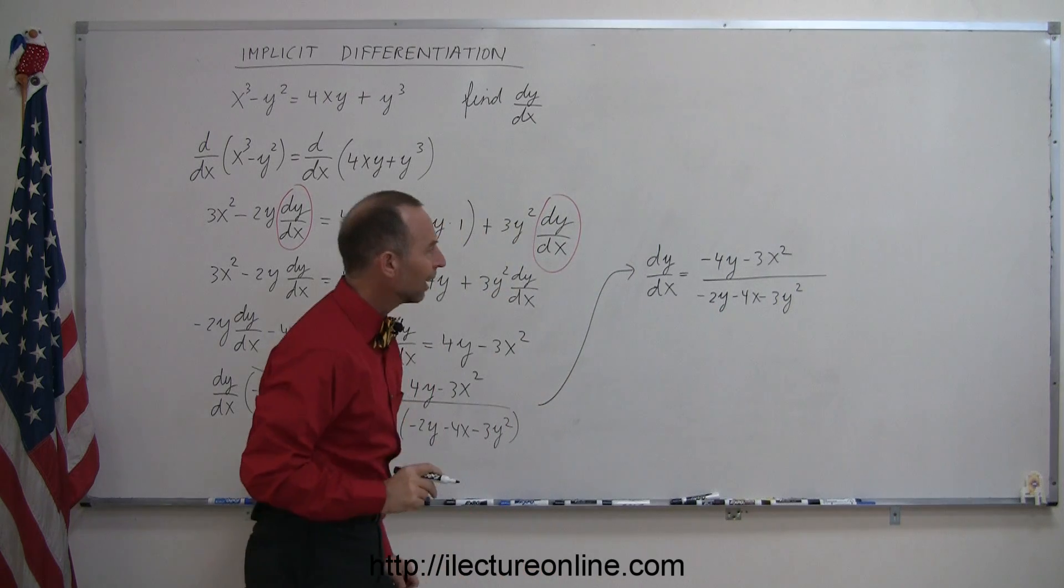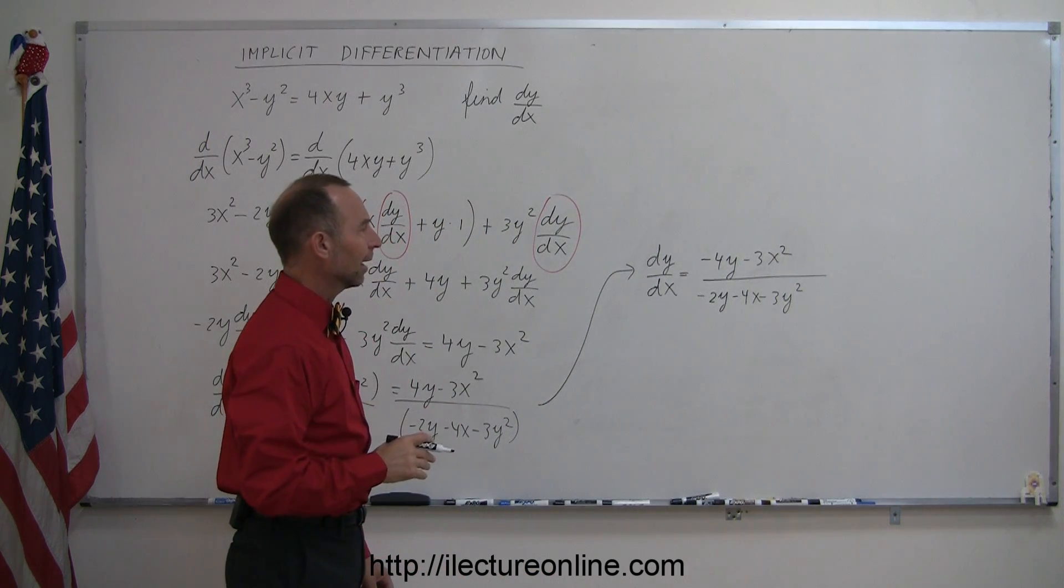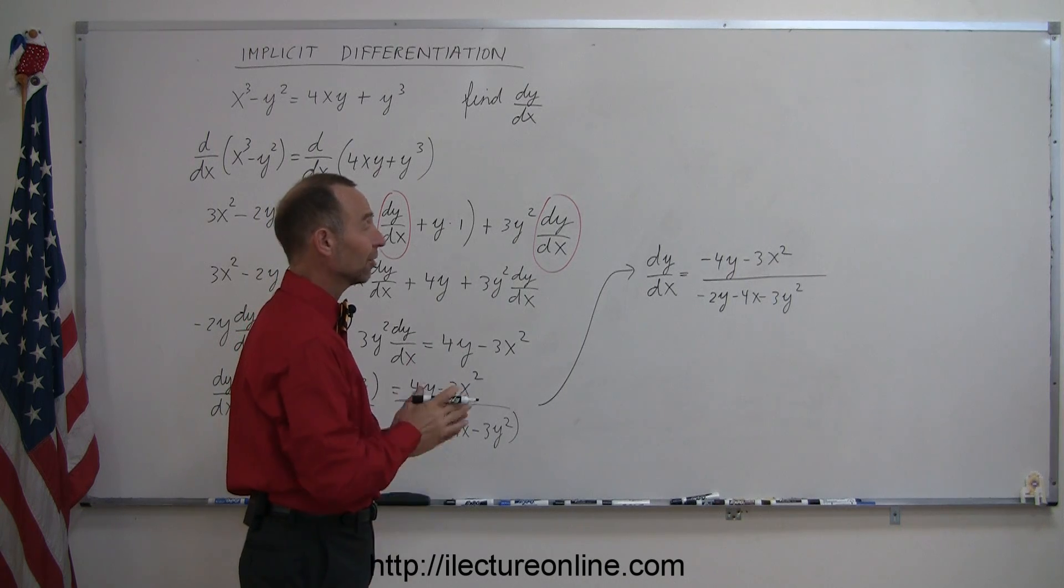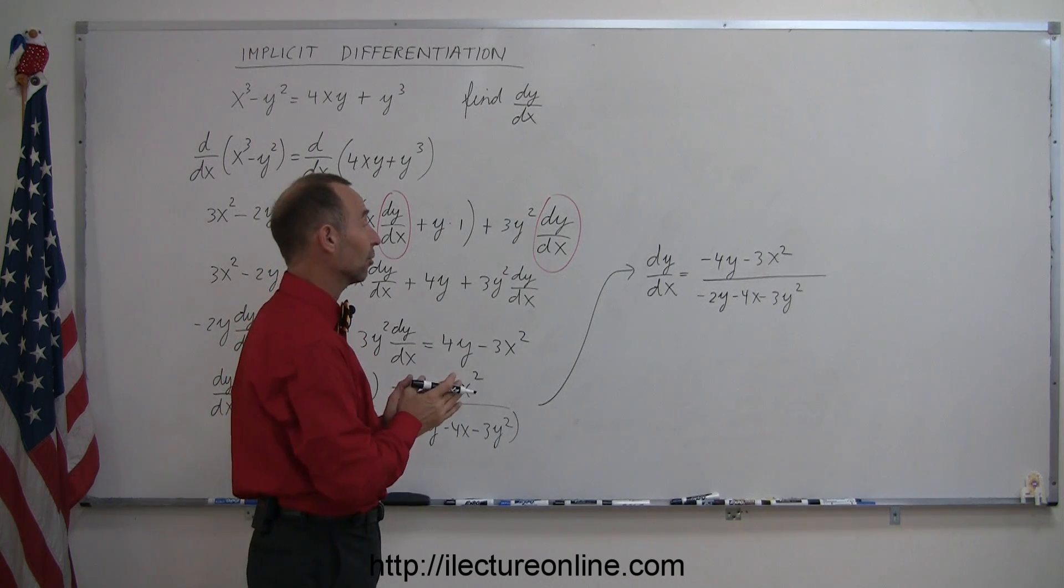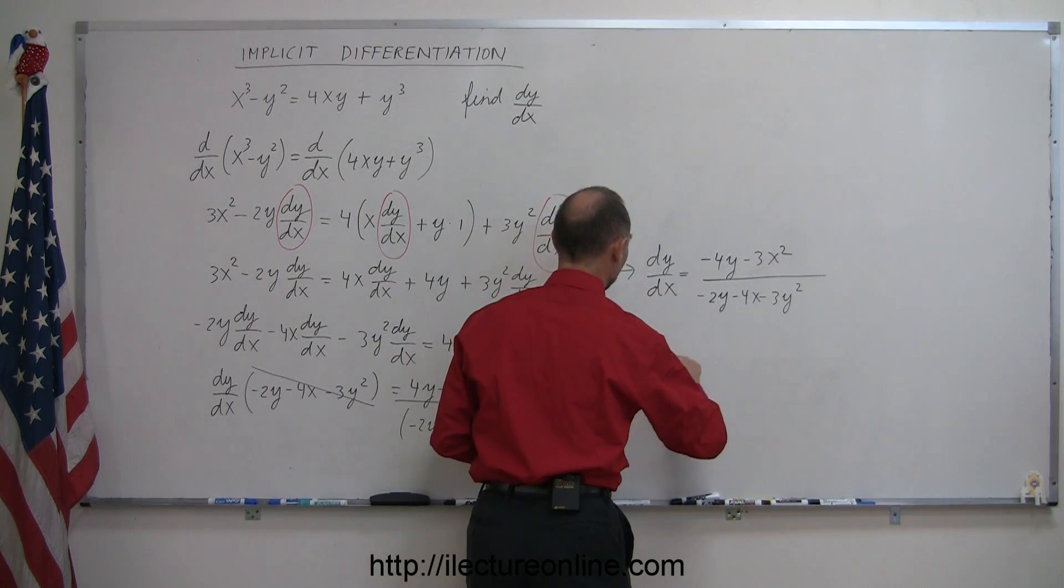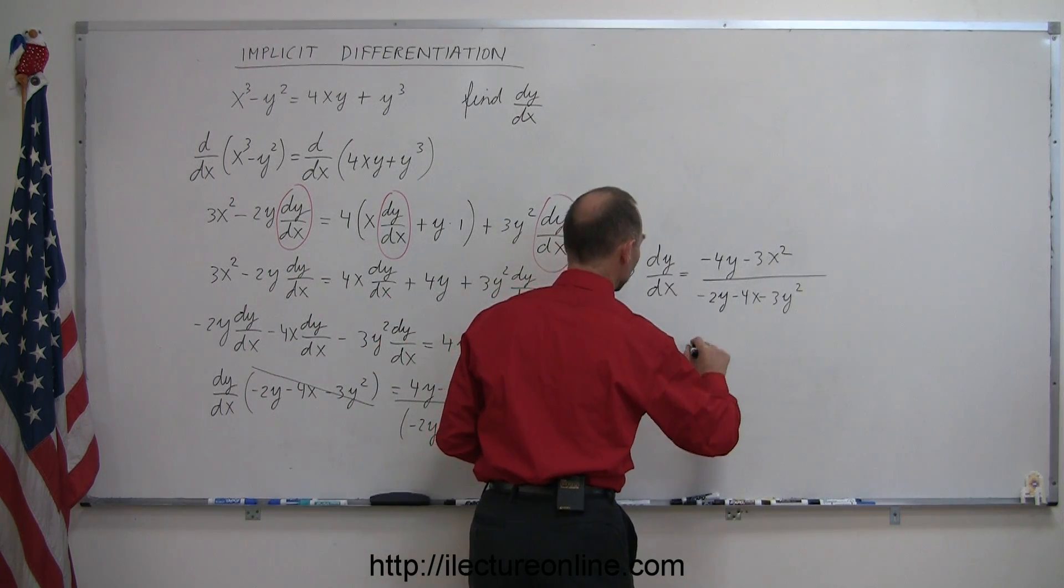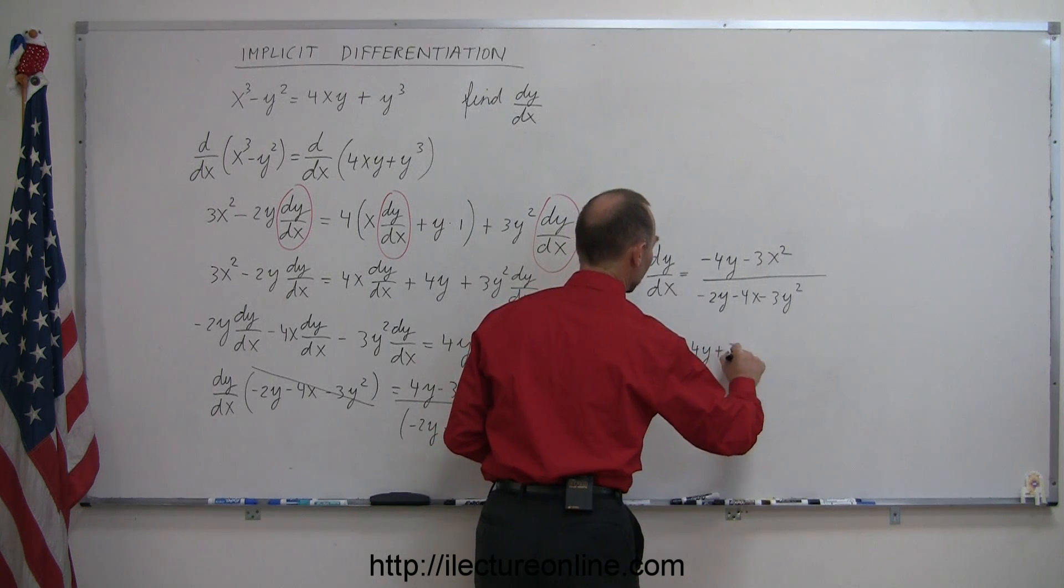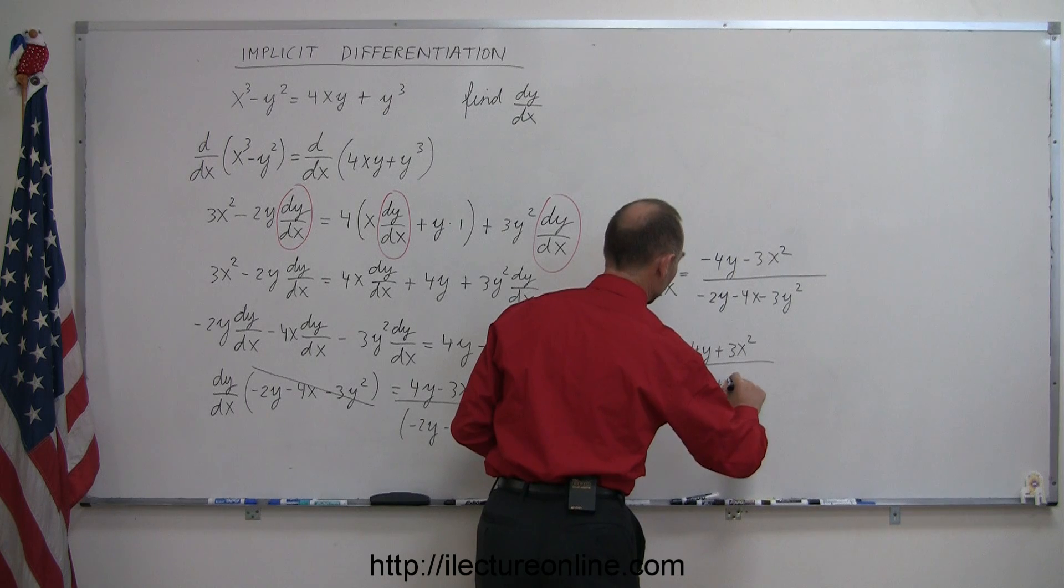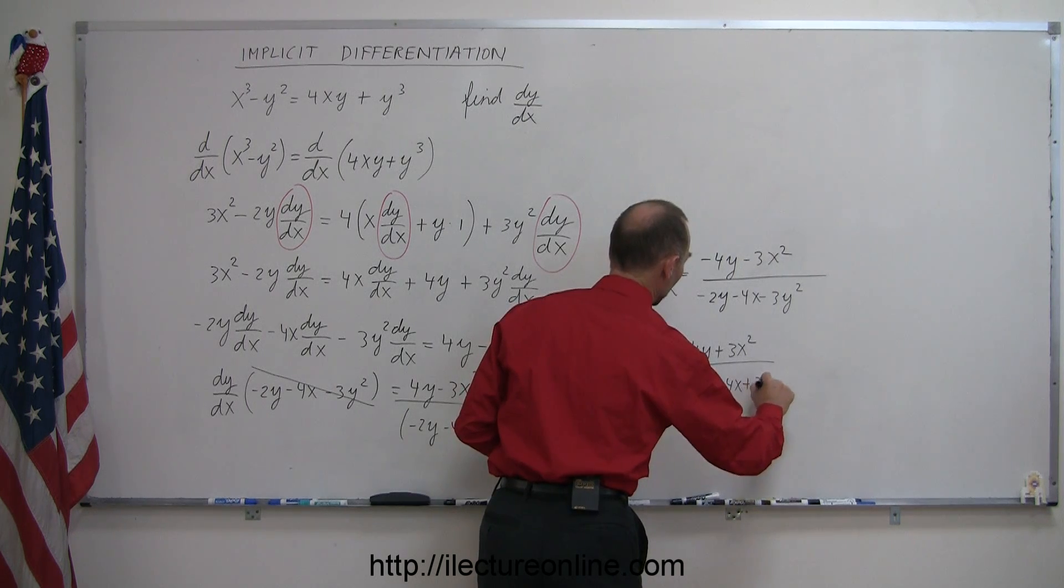Now I did notice something here. Every term on the right side has a negative in front. I have negatives on the numerator, negatives in the denominator. I can multiply both sides, or I should say the top and the bottom, by negative 1. So I can more cleanly write this as dy/dx equals 4y + 3x² divided by 2y + 4x + 3y².